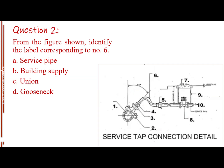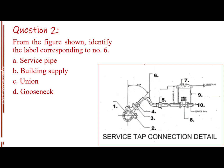Question number 2. From the figure shown, identify the label corresponding to number 6. Letter A, service pipe. Letter B, building supply. Letter C, union. Letter D, gooseneck. The answer is letter D, gooseneck.